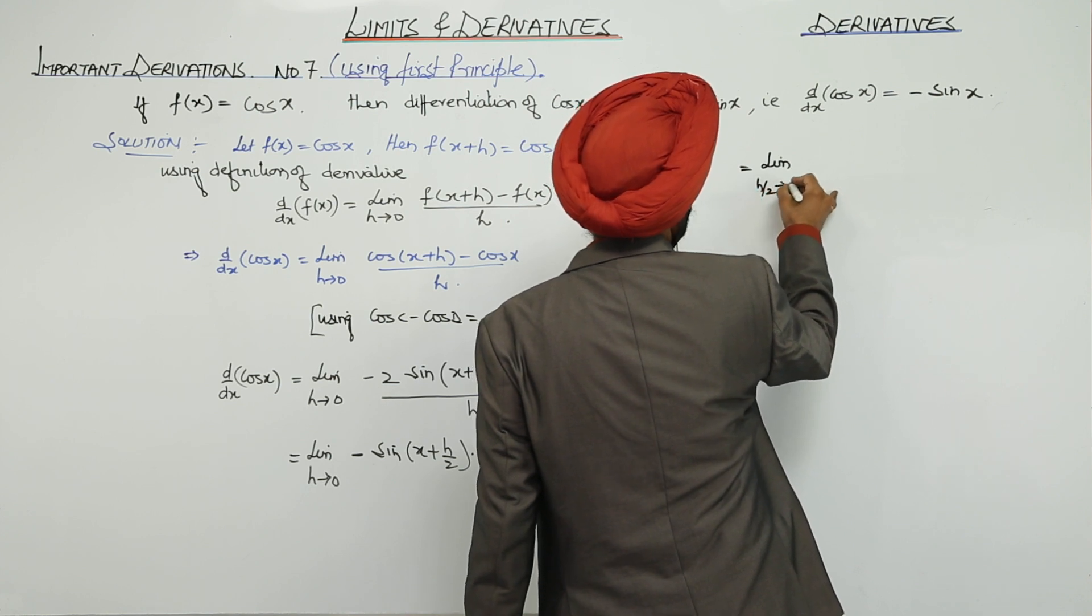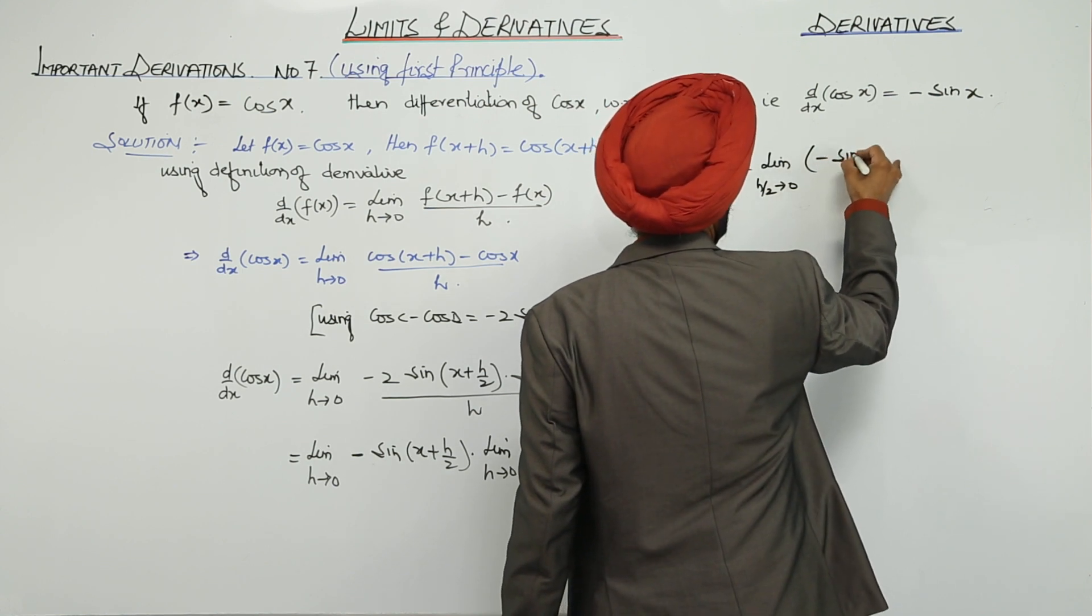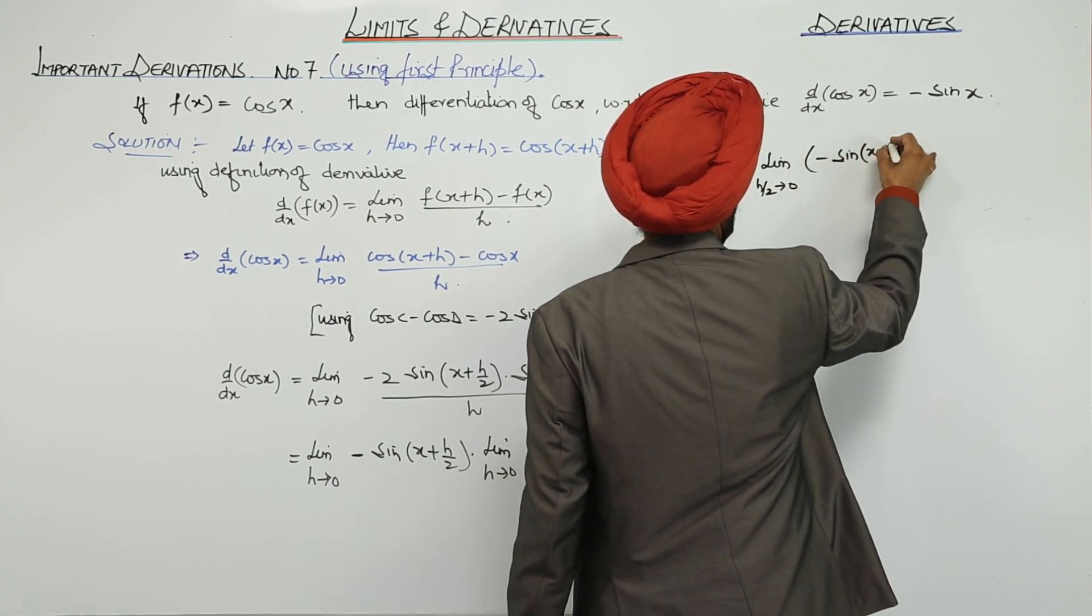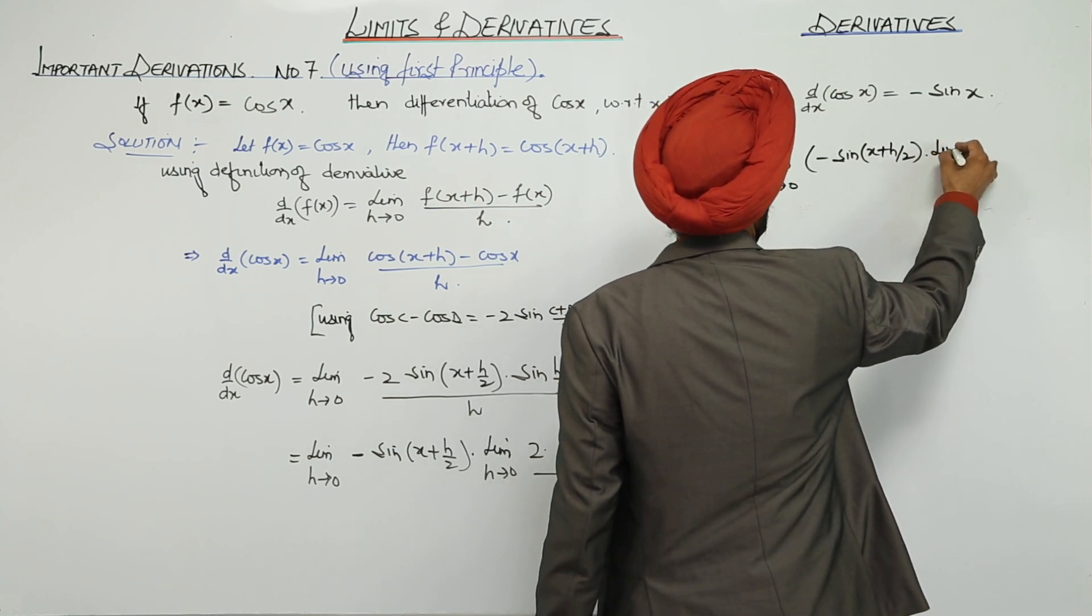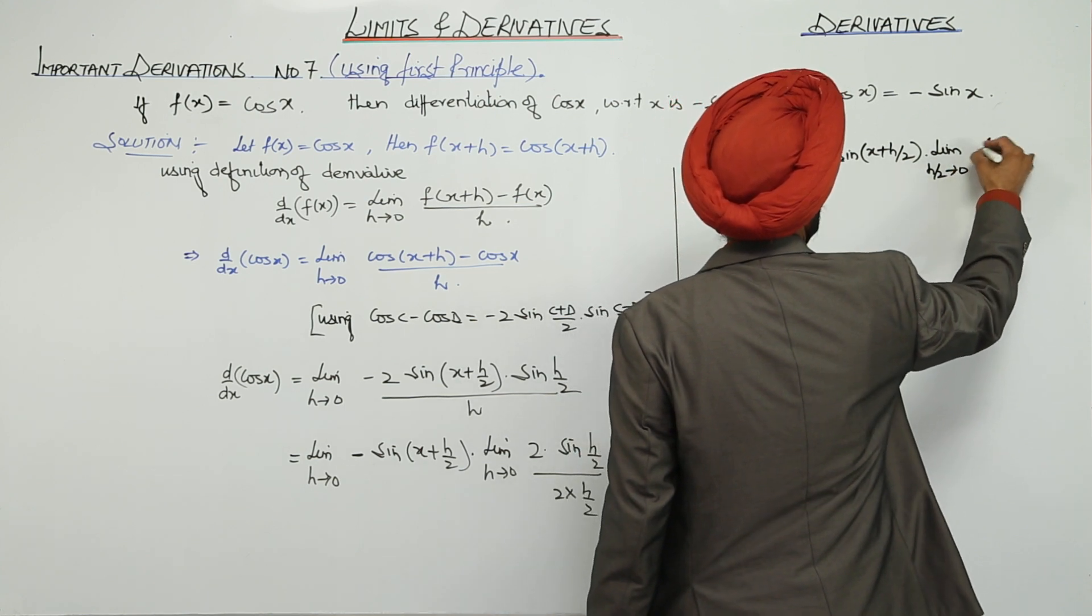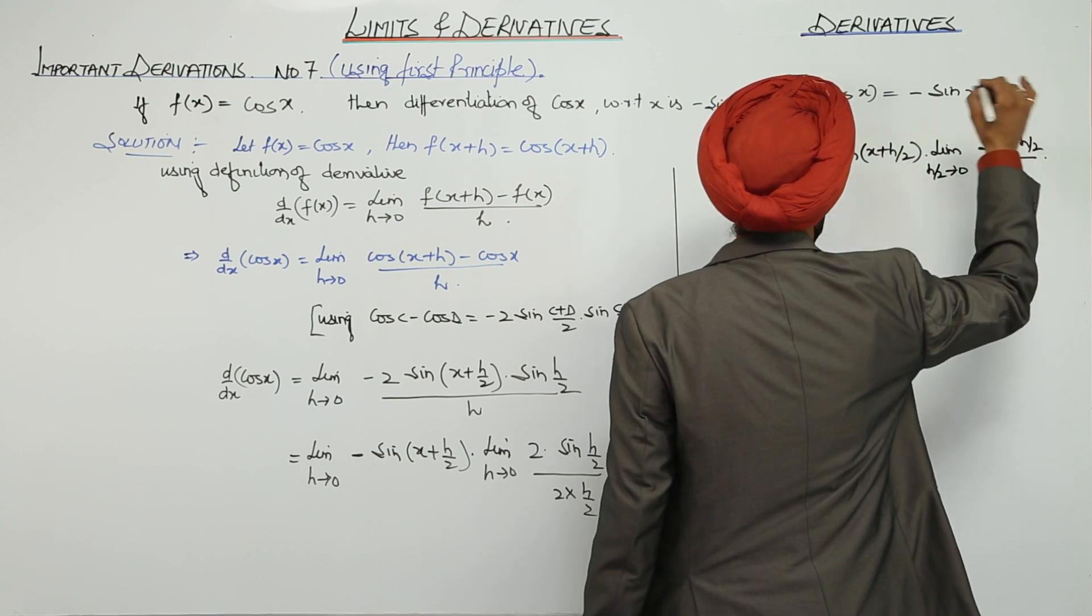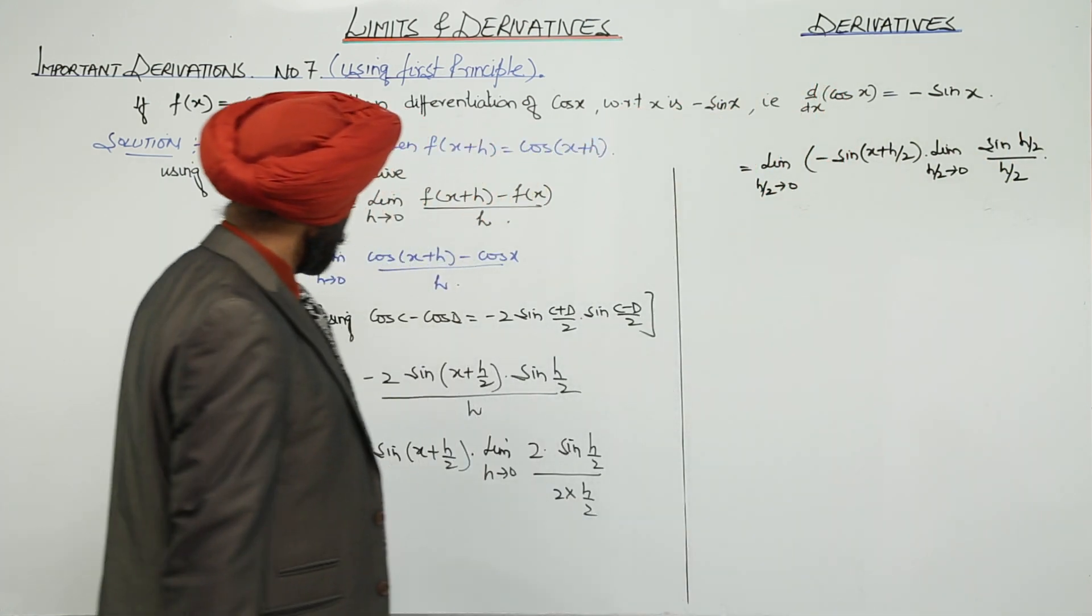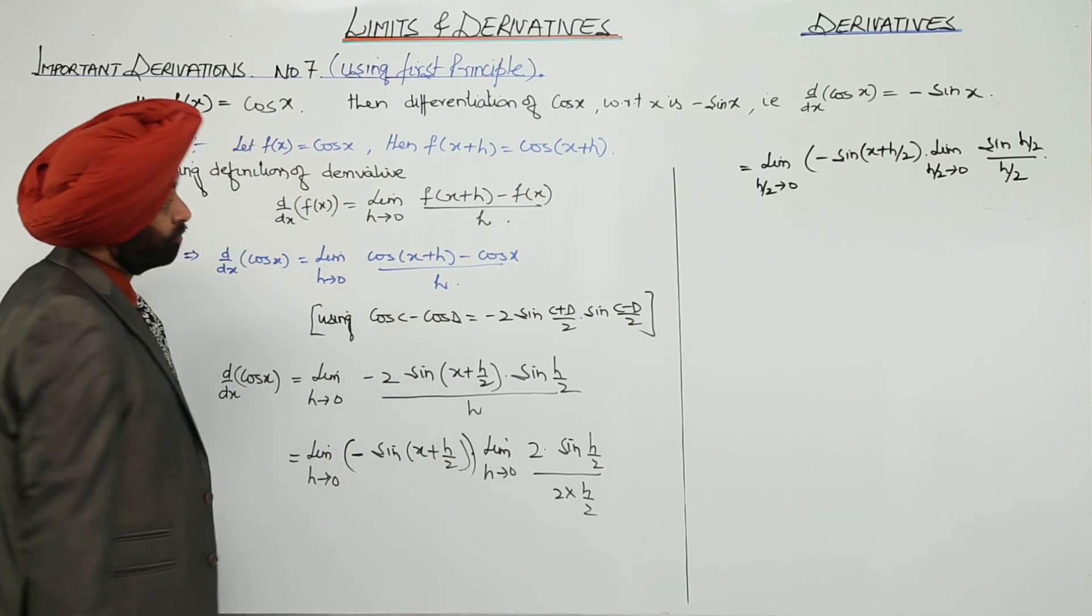h/2 approaches to 0, negative of sin(x + h/2) limit h/2 approaches to 0, sin(h/2) upon h/2. This part, now I have taken this like this one, in the negative part.